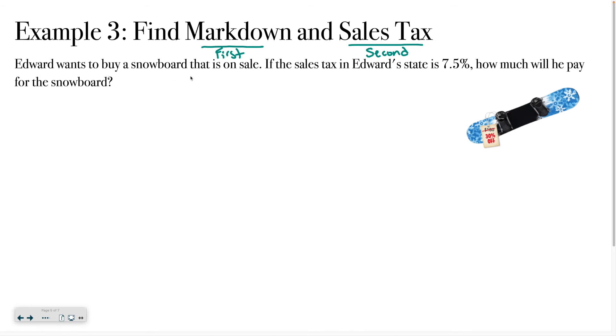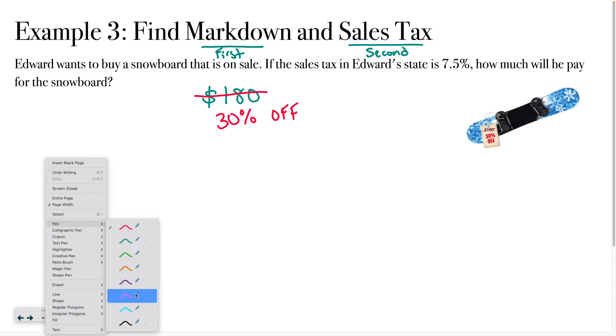All right, let's try to figure out this problem. We have Edward wants to buy a snowboard that is on sale. If the sales tax in Edward's state is 7.5%, how much will he pay for the snowboard? Now this picture is pretty small, but this is what it says. It says that the cost is $180, but then it's doing this typical thing where they cross out that price usually in a bright color like red to get your attention, and then they write the percent and in big capital letters they say off because those marketing techniques really want to draw you in. So this starting cost is $180.